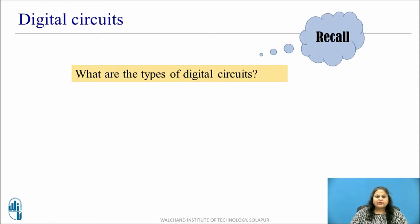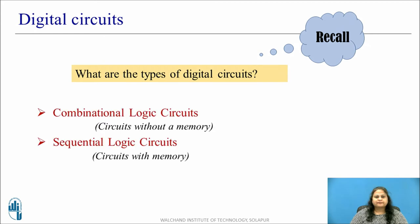Before moving ahead, pause this video and recall what are the different types of digital circuits? We all know that digital circuits are classified into two types: combinational circuits, which are memoryless circuits, and sequential circuits, which are circuits with memory — in other words, circuits that make use of flip-flops and latches.